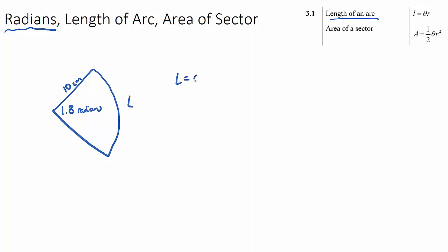We just use the formula given in our formula booklet. The arc length will be θ multiplied by R, and we need to make sure θ is in radians. So our arc length will just be 10 times 1.8, which would be 18 centimeters.